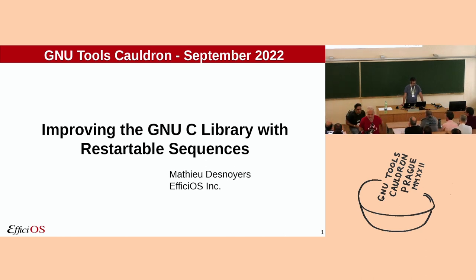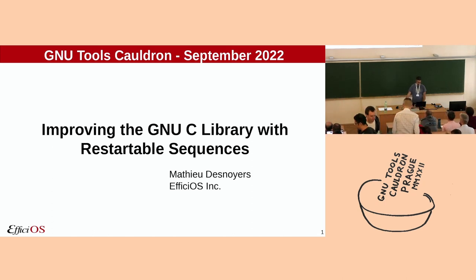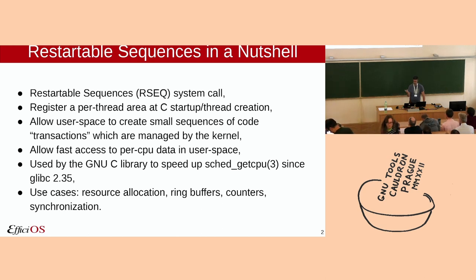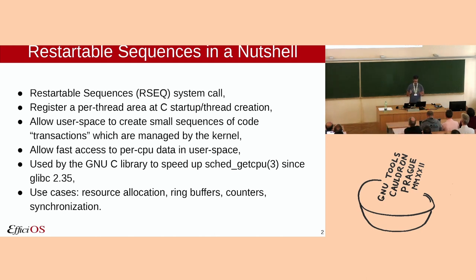I want to specifically discuss how we can improve the GNU C library with Restartable Sequences. In a nutshell, what is a Restartable Sequence? It's a system call in Linux. It allows libc to register a per-thread area at C startup and at pthread creation. That then allows user space to create small sequences of code, which you could see as transactions managed by the kernel. In those small transactions, a few instructions can do fast access to per-CPU data in user space.